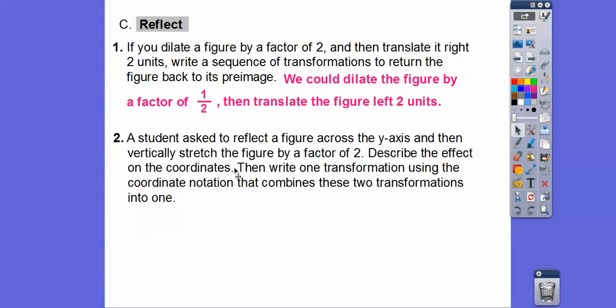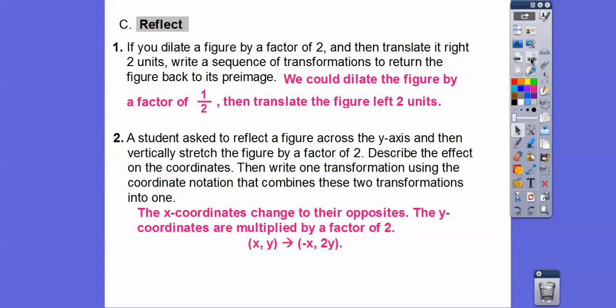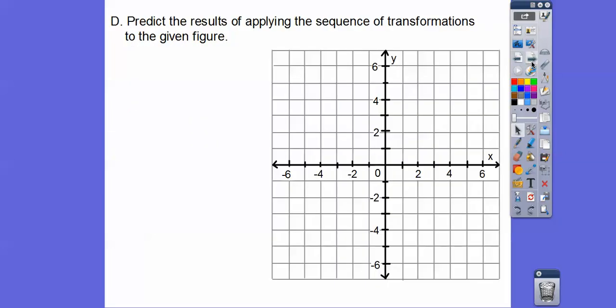A student is asked to reflect a figure across the y-axis and then vertically stretch by a factor of 2. Describe the effects on the coordinates and write one transformation using coordinate notation. The x-coordinate becomes its opposite (reflection across y-axis), and the y-coordinate is multiplied by 2 (vertical stretch). So (x, y) maps to (−x, 2y).